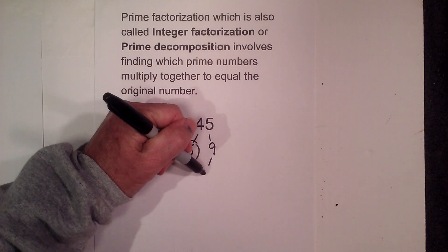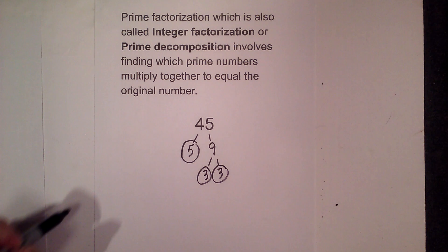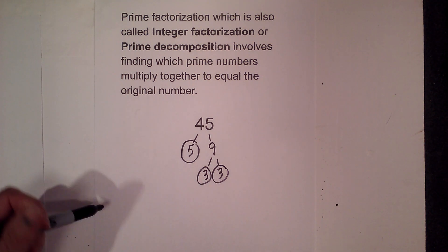Now 3 times 3 equals 9. I'll circle both of the 3's, and I'm now down to just prime numbers, so that means I'm finished.